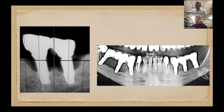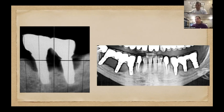Это результат наблюдений, а не самовольных выводов. У таких пациентов будут и гнойные пародонтиты, и периимплантиты, и периимплантозы атрофического типа. На это влияет конституция: у пациентов гипертрофической конституции чаще идёт периимплантит гнойно-воспалительного типа — карманы глубже, гигиена сложнее. У пациентов астенической конституции процессы идут больше по трофическому типу.